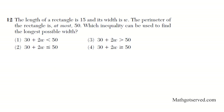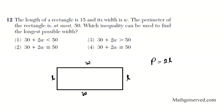Moving along to question 12. It says the length of a rectangle is 15 and the width is w. The perimeter of the rectangle is at most 50. Which inequality can be used to find the longest possible width? The perimeter formula is 2 length plus 2 widths. The perimeter has to be at most 50, so it could be 50 or less. At most basically means less than or equal to.